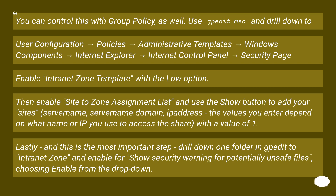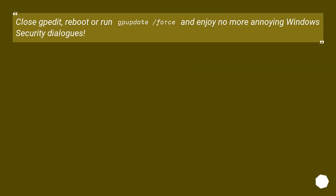Lastly, and this is the most important step: drill down one folder in gpedit to Internet Zone and enable 'Show Security Warning for potentially unsafe files', choosing Enable from the dropdown. Close gpedit, reboot or run gpupdate /force, and enjoy no more annoying Windows Security Dialogues.